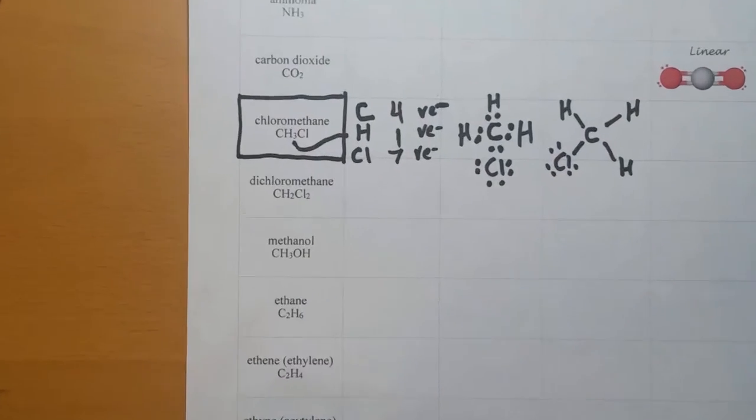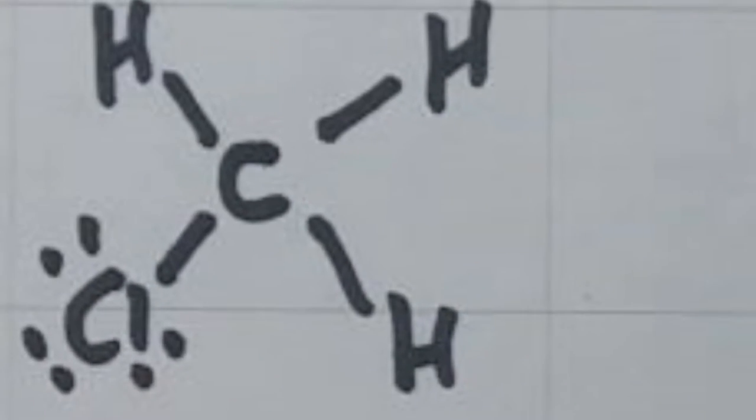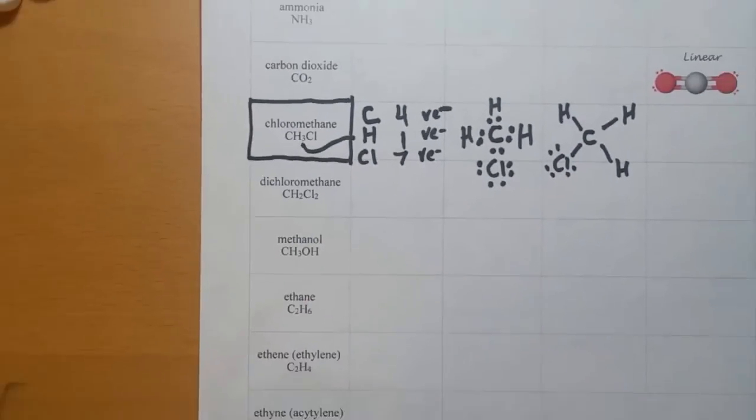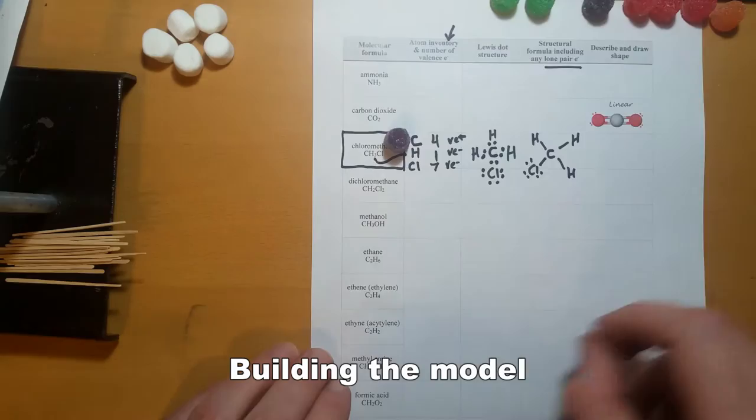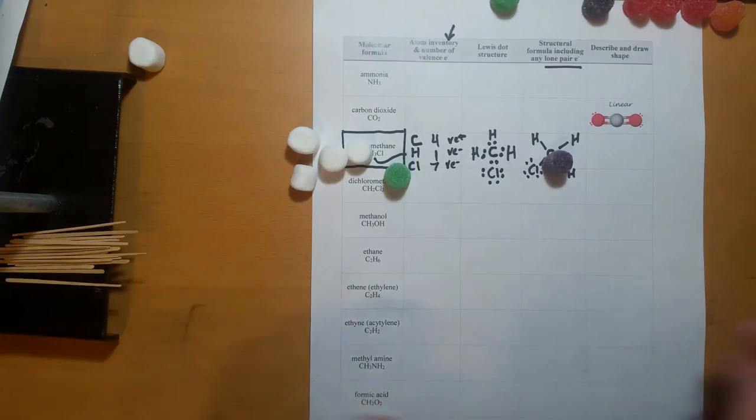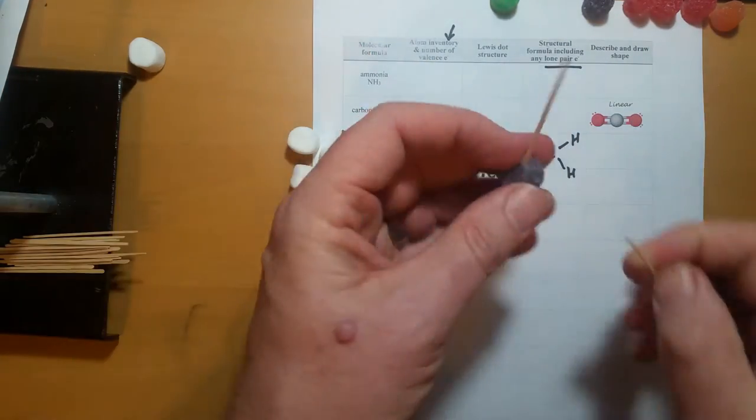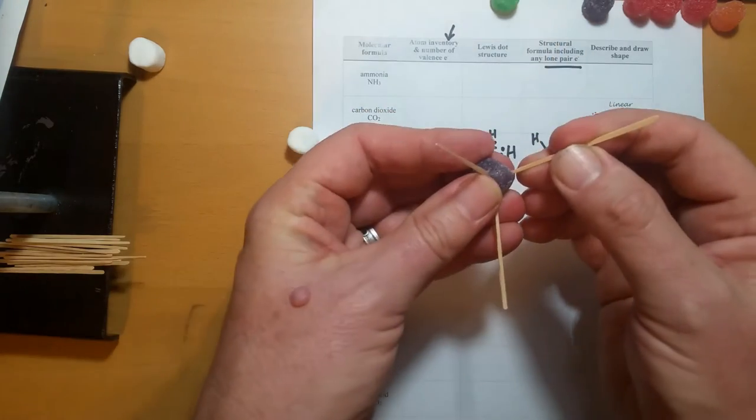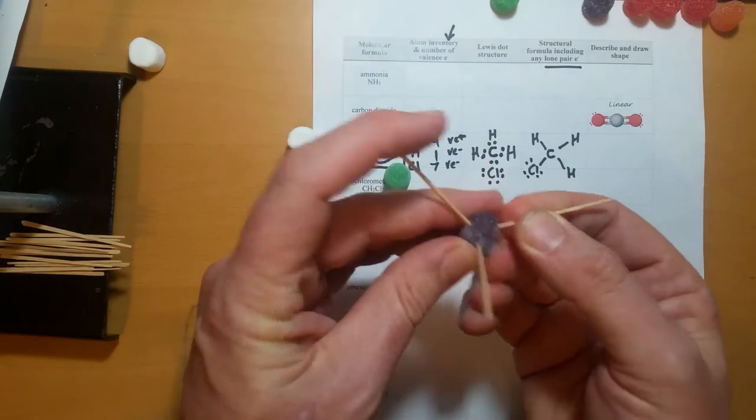Now we can see the central atom carbon and chlorine with its three lone pairs. It's time to build our model. Let's start with carbon, the central atom. Carbon forms four bonds according to our structural formula, so we can add four toothpicks.